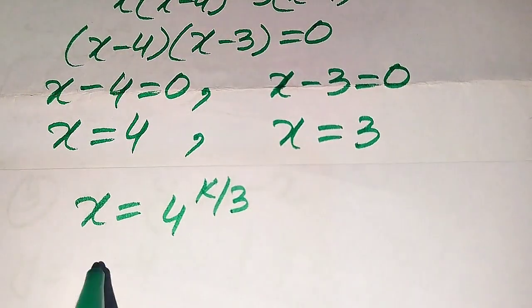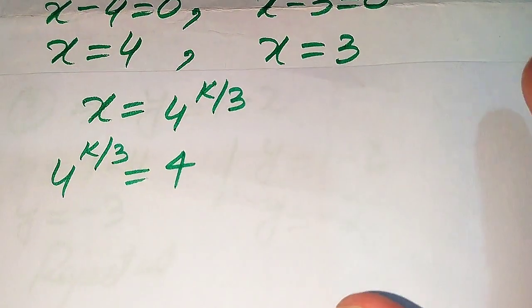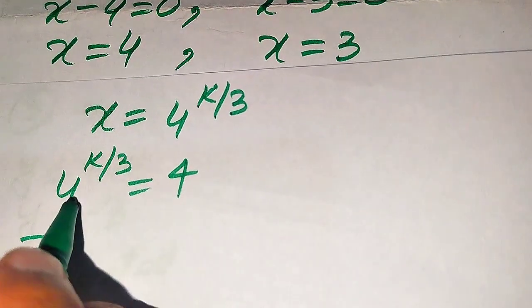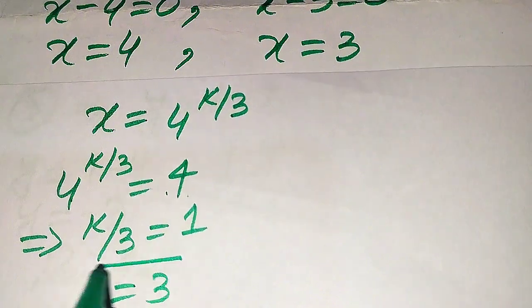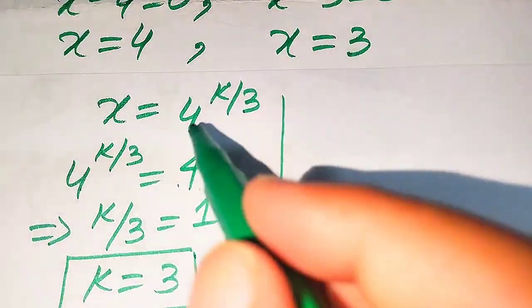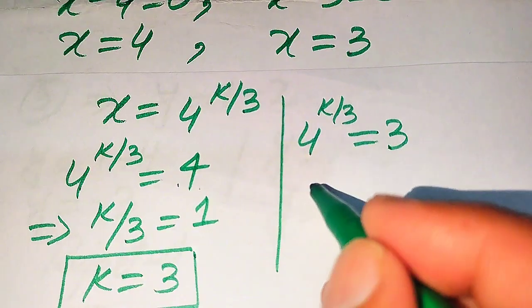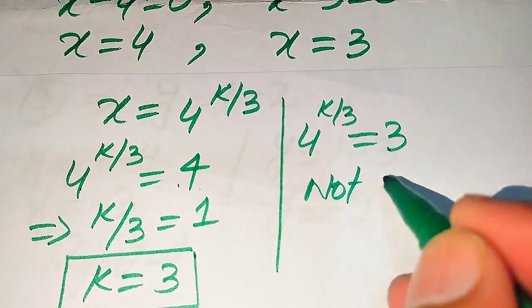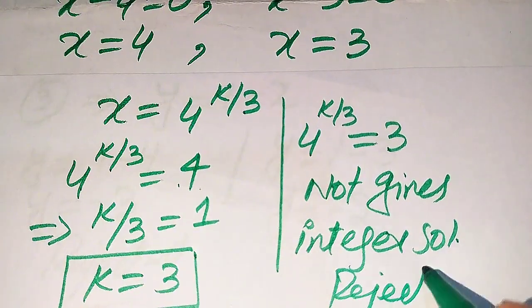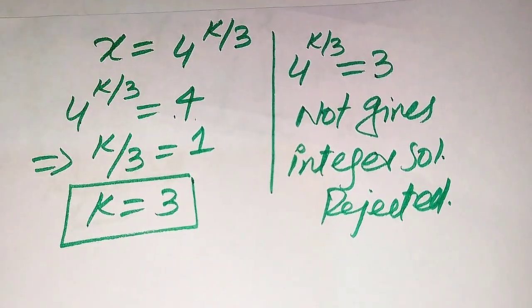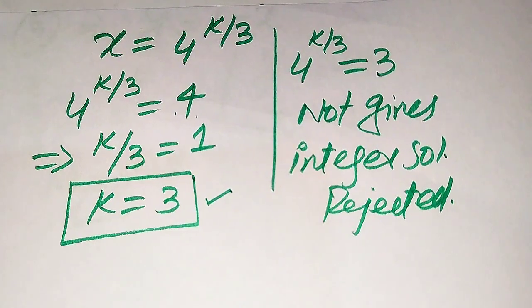When we put x = 4 into 4^(k/3) = 4, we easily get k = 3. When we put x = 3 into 4^(k/3) = 3, this cannot give us an integer solution, so we reject this case. Therefore the final answer is k = 3. Thank you so much for watching this video — please subscribe to my channel for more exciting videos.